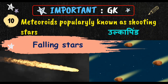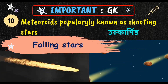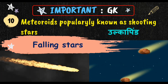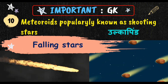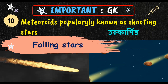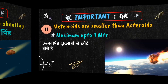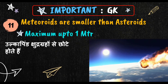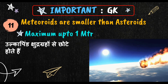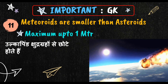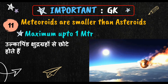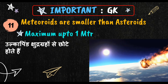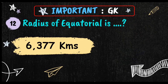Meteoroids are popularly known as shooting stars or falling stars. In Hindi, they are called Ulkapinda. These meteoroids are smaller than the asteroids, so they will be maximum up to the length of 1 meter. Generally, these meteoroids will burn in the mesosphere when they get friction with the gas molecules.